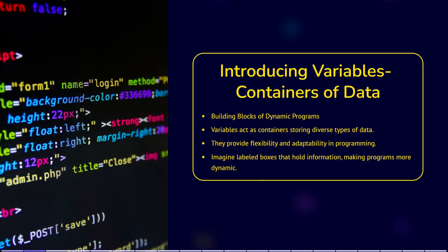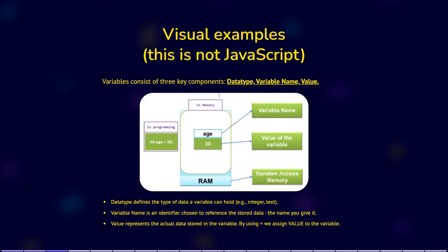Imagine variables as labeled boxes where you can store various things, such as numbers, text, or complex data. These boxes have names, called identifiers, which you choose to help you refer to the stored data easily. A variable can be of a specific data type, have a specific variable name, and contain a value.